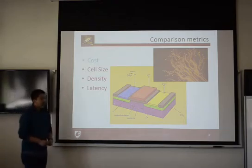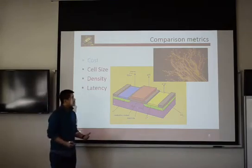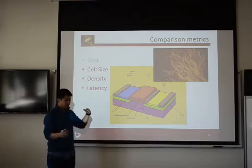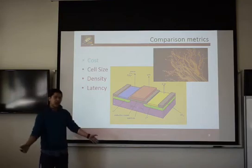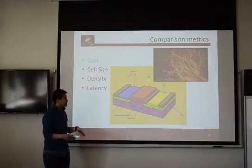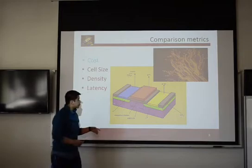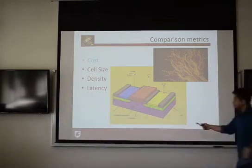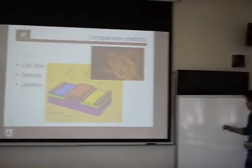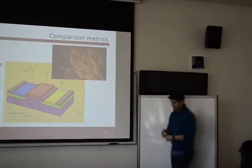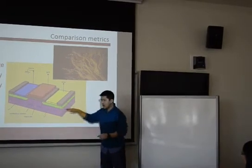The first comparison metric is cost. What makes a silicon chip expensive is the amount of wires you need on your chip, because that takes up a lot of room on your silicon wafer, and those wires are made out of metal, which is also expensive. Another thing that's expensive about silicon chips is when you design a chip, you want to make your integrated circuits not just grow in the x and y directions.